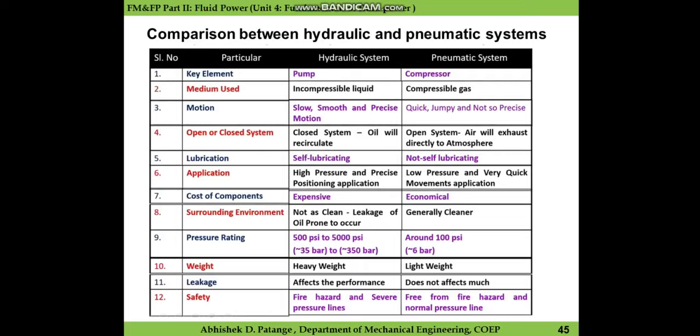The third parameter is motion. As far as hydraulic systems are concerned, the motion achieved through actuators is slow, smooth, and precise. The reason is that since incompressible liquids are used, the motion achieved by pressurized liquid is always slow. The flow from one end to the piston, since it is moved by a liquid, gives smooth and precise motion.